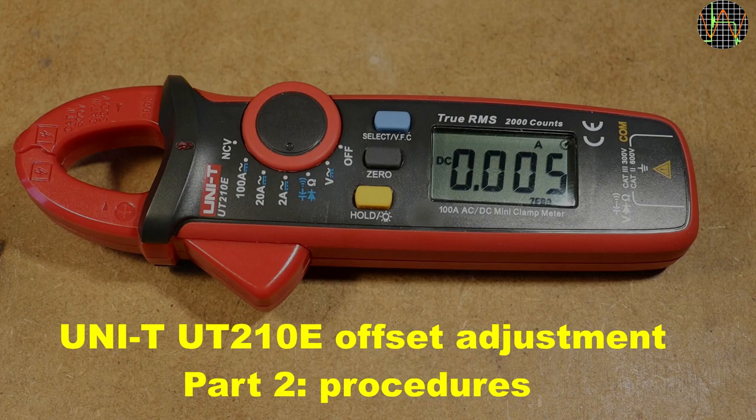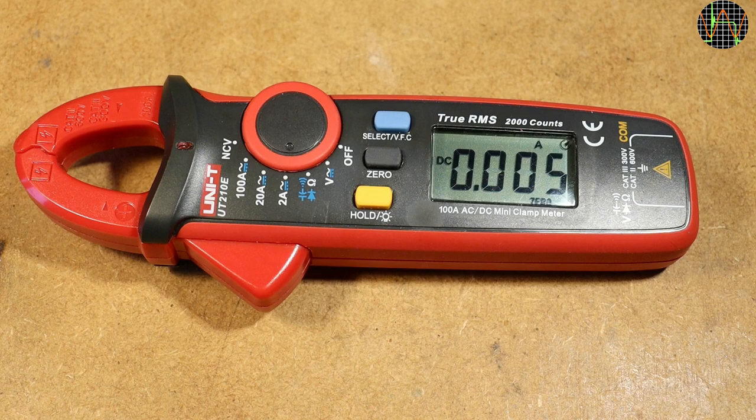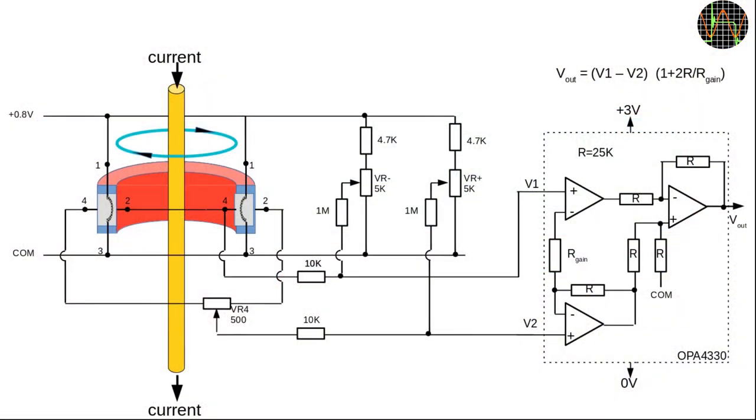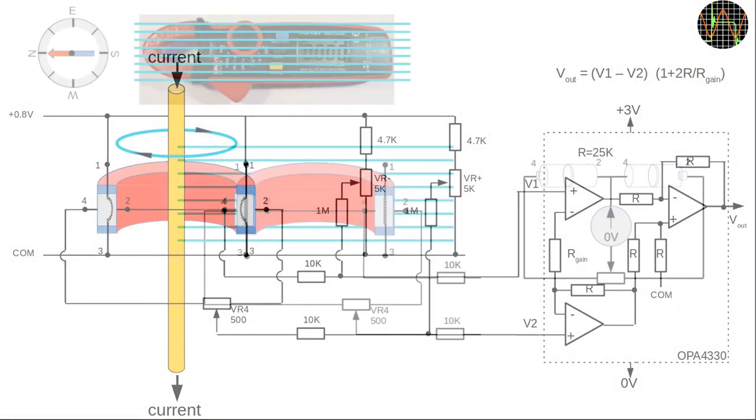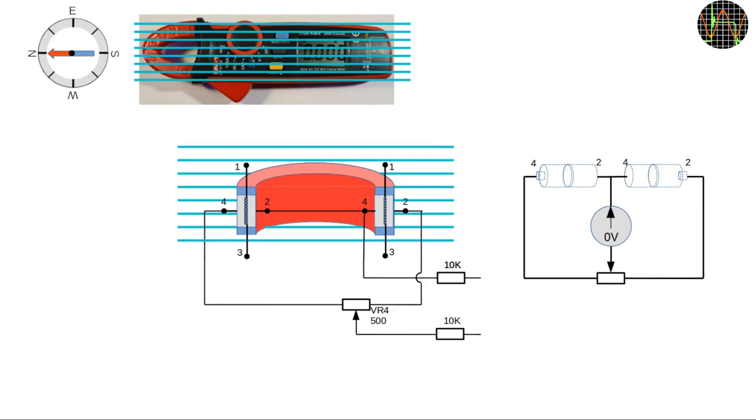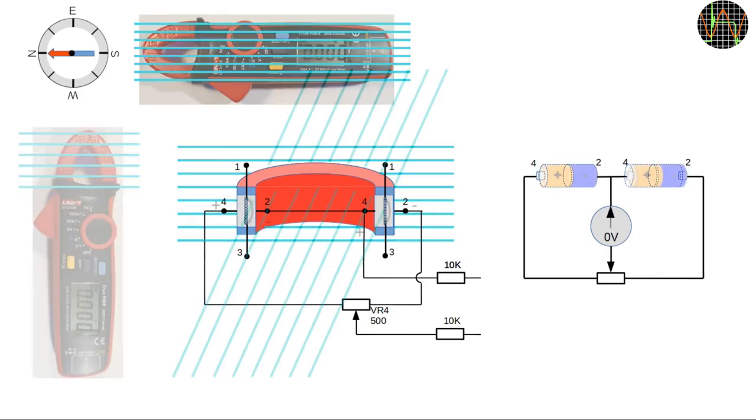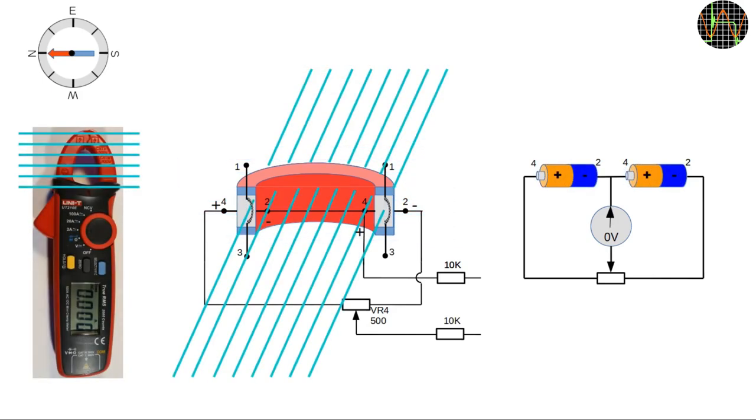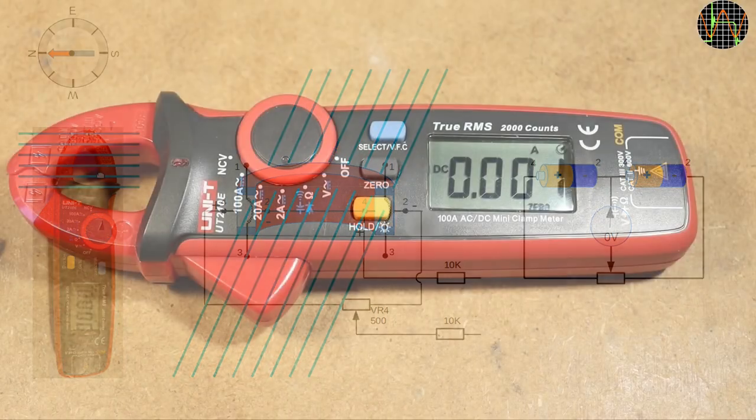Hi there, this is part 2 of the video on adjusting the trim pots in the UT-210E to minimize the offset displayed in the DC amp range. Part 1 hopefully explained the theory why the UT-210E shows these offsets, why you can reduce but not completely eliminate them, and why they keep changing when you change the orientation of the meter.